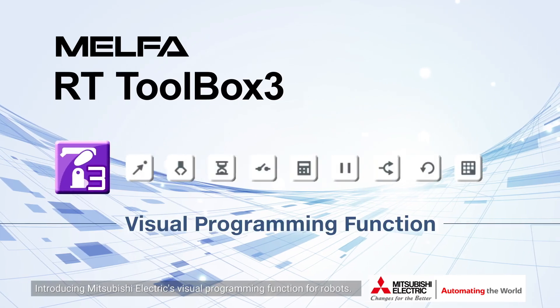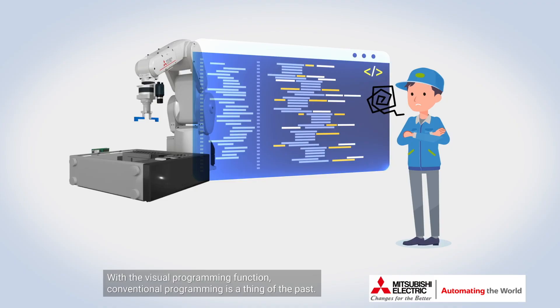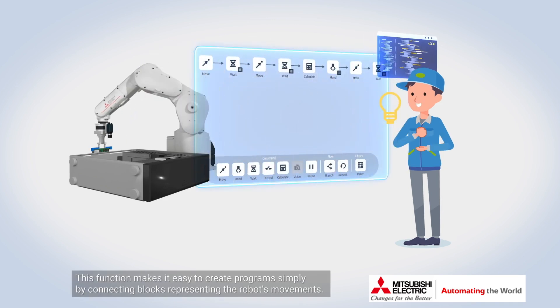Introducing Mitsubishi Electric's visual programming function for robots. With the visual programming function, conventional programming is a thing of the past. This function makes it easy to create programs simply by connecting blocks representing the robot's movements.